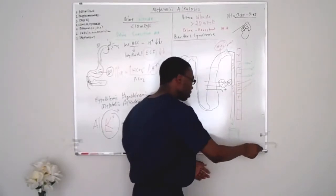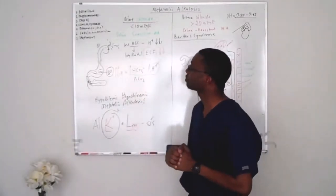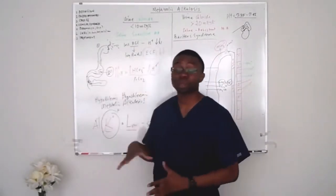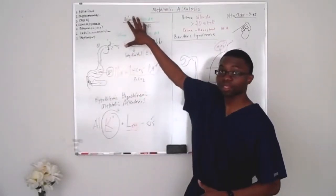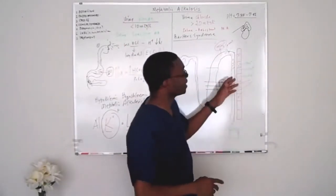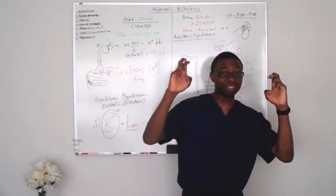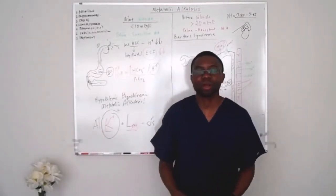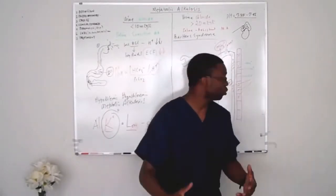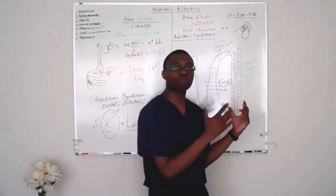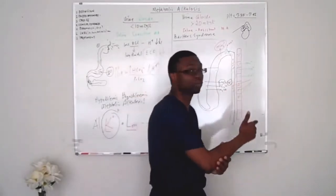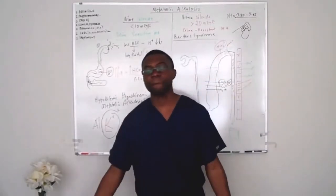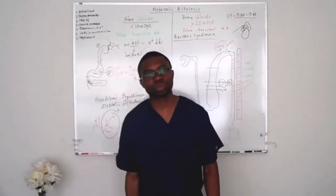Now let's talk about treatment. We've diagnosed these patients — they're going to come in with symptoms. In the case of saline-sensitive alkalosis, the symptoms are going to be vomiting. In the case of saline-resistant, they're going to have an endocrine-looking syndrome: headaches, polyuria, weakness — because they're losing so much potassium. You check the labs: sodium is slightly high, potassium is a little bit low, blood pressure is elevated.